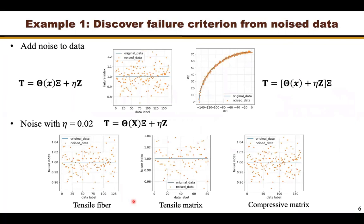To add noise to the data, one method is to add noise directly to the target value — for example, using a Gaussian distribution multiplied by coefficient eta and adding this to the target value. Another method is to add noise to the candidate functions. For implementation simplicity, we add noise directly to the target value. The bottom three plots show the data after adding noise with a noise magnitude equal to 0.02, with maximum error in the plots reaching 4% difference. In this study, we did not investigate the compressive fiber failure mode, because Hashin generates a rectangular failure envelope making it easy to determine that angle.